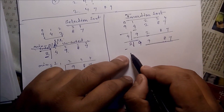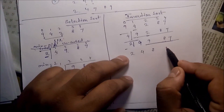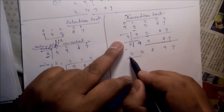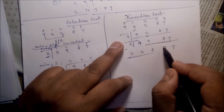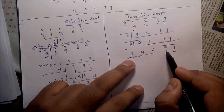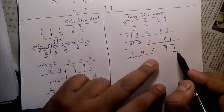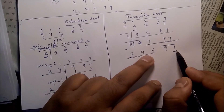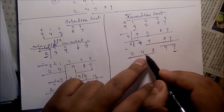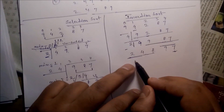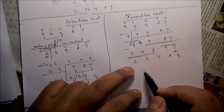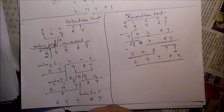So we get 2, 4, 8, 9, 7. This part is the sorted part, this part is the unsorted part. Now take 7: compare 7 with 9 — 7 is lesser; 7 with 8 — 7 is lesser; 7 with 4 — 4 is less than 7, so 7 should be in between 4 and 8. Output will be 2, 4, 7, 8, 9.